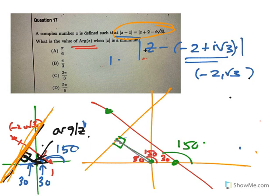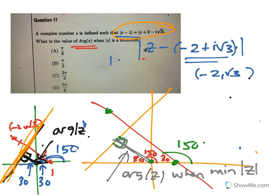What does this line represent? That represents the argument of z when the minimum of mod z - when mod z is a minimum, the shortest distance is your perpendicular distance. So that means the argument is 150.